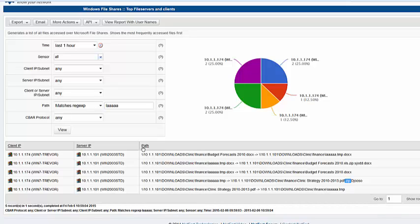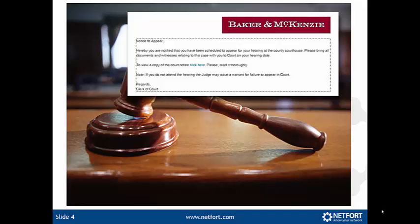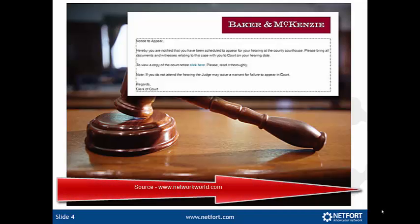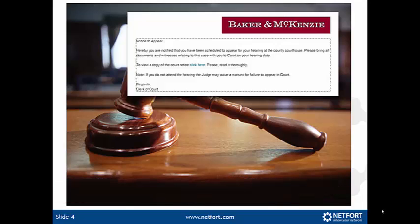So let's talk very briefly about how this happened — how did this get into the network? The most common way ransomware gets into a network is when users receive a strange email and click on some links. Now when I say strange, it may not appear strange to the user.